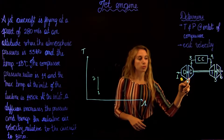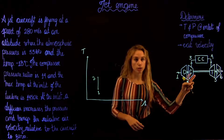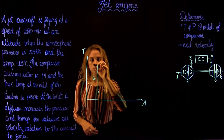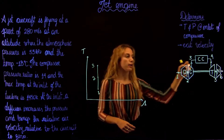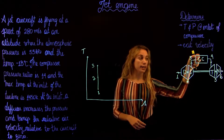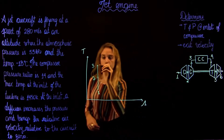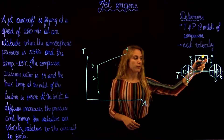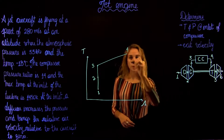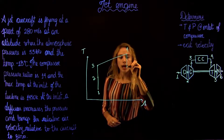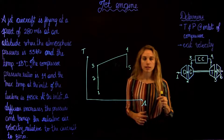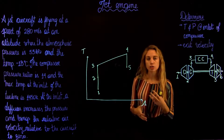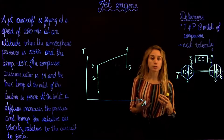Then we're going to go through the isentropic compression in the compressor. Then, from 3 to 4, we are adding heat at constant pressure. Then we go through the isentropic expansion in the turbine. In a jet engine, the power produced by the turbine is just enough to drive the compressor and auxiliary equipment, so the actual net work is zero.